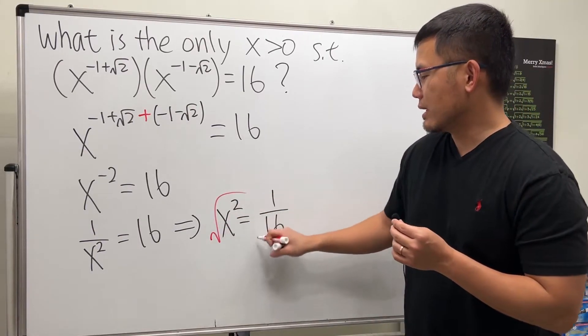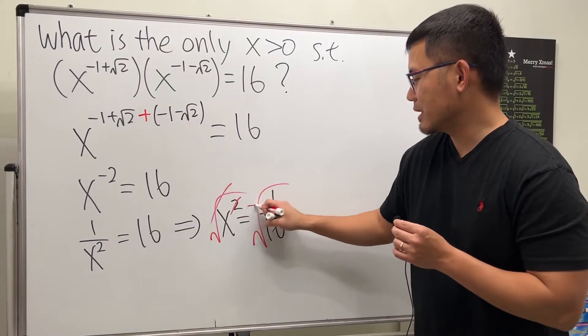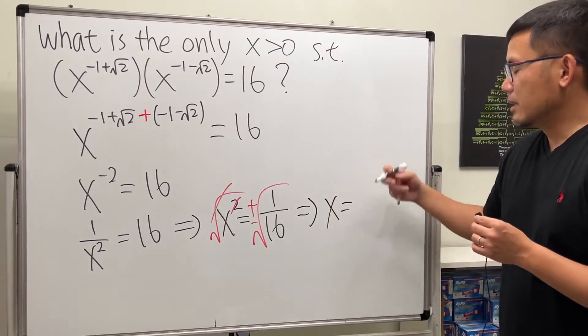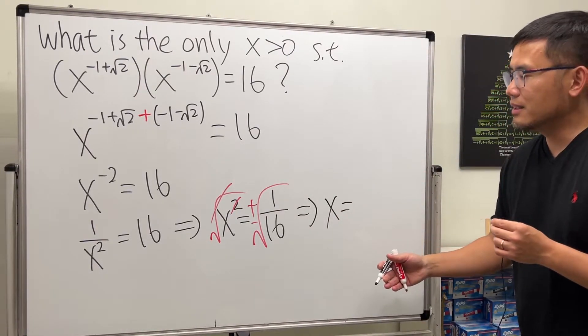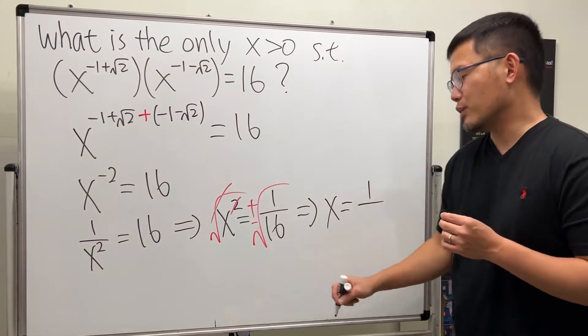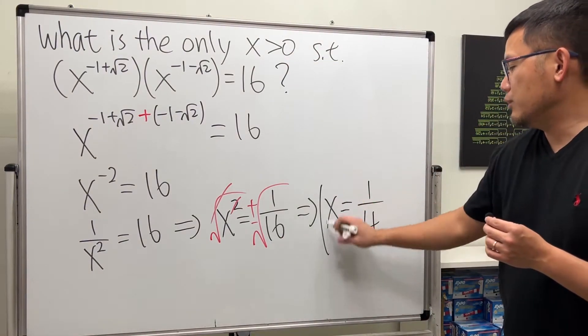Then finally just take the square root on both sides. We get x equals plus or minus, but we just want x is greater than zero, so just 1 over square root of 16, which is 1 over 4. And you got that.